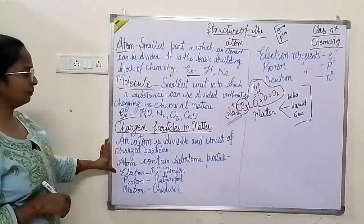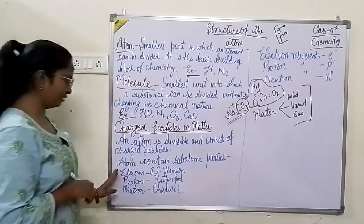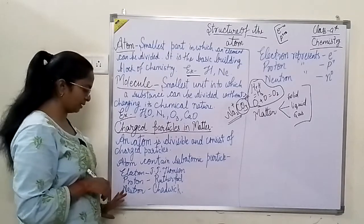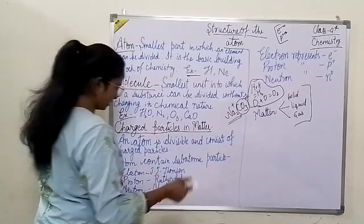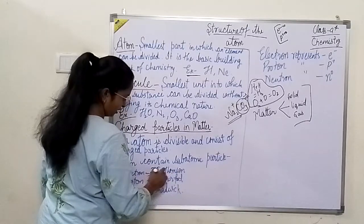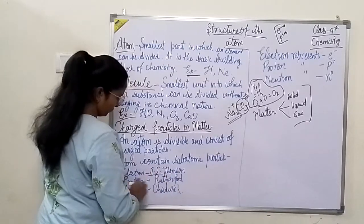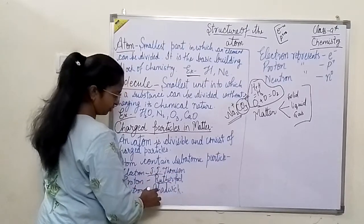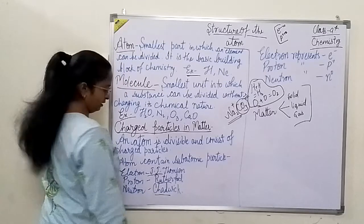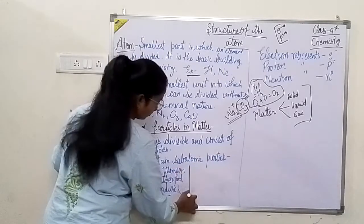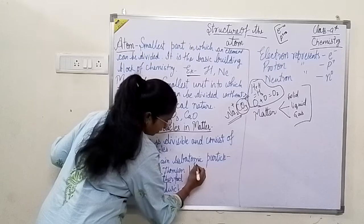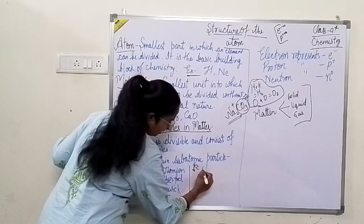So we have charged particles which are divisible. Atoms are divisible into subatomic particles: electron, proton, and neutron. Electron's discovery is credited to J.J. Thomson, Proton's to Rutherford, and Neutron's to Chadwick.